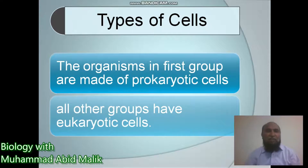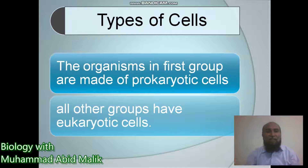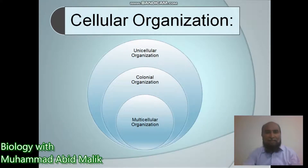The organisms in the first group, Monera, are made of prokaryotic cells. All other four groups have eukaryotic cells.